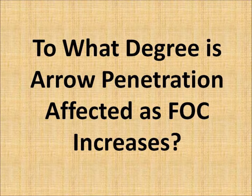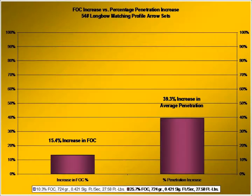We're going to look at six different graphs, and all we're looking at on these arrows is the change in FOC and the change in arrow penetration between matched sets of arrows — same broadhead, same shaft diameter. This is from a 54-pound longbow. We have a normal FOC versus an EFOC arrow: 10.3% and 25.7% FOC. Both arrows weighed 724 grains. A 15.4% FOC increase gives us a 39.3% increase in penetration.